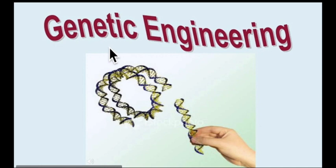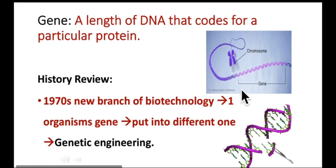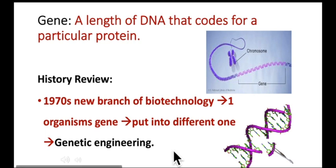Today we are going to start the last topic of this chapter on biotechnology, which is called genetic engineering. The word 'genetic' is derived from the word 'gene.' A gene is a length of DNA that codes for a particular protein. In the 1970s, a new branch of biotechnology emerged in which scientists first found out how to take a gene from one organism and put it into a different one to produce a product of their choice — something useful for mankind. This branch of biotechnology is called genetic engineering.